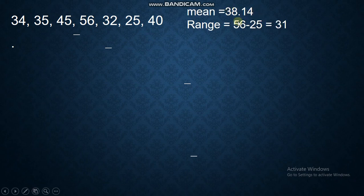Now, we have this mean, 38.14, by simply adding the data and divide it by the number of data, which is 7. How about the range? We have here 31. 56 minus 25.